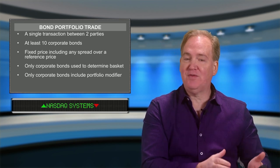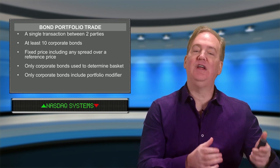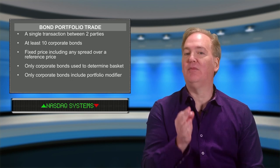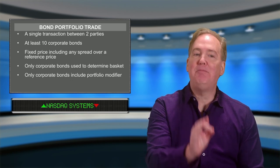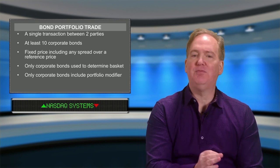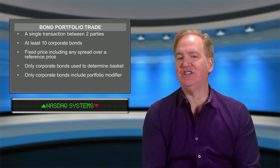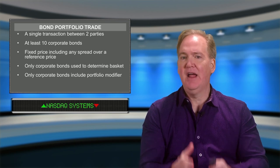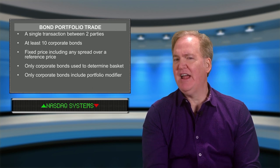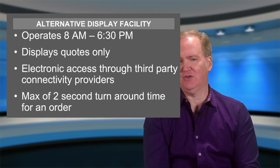If the portfolio contains both corporate debt and agency debt, you only count the corporate debt, and only the corporate debt will have the portfolio modifier appended to it. It's also important to note that it can only be a two-party transaction — one buyer and one seller — not multiple parties engaging in the transaction at the same time. So if you see a bond portfolio trade or basket trade on the test, those are the key qualifications.